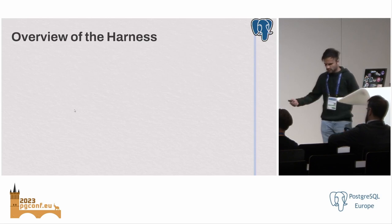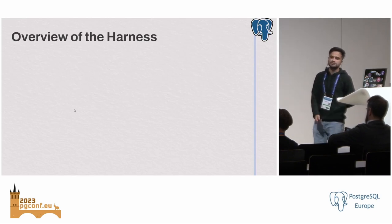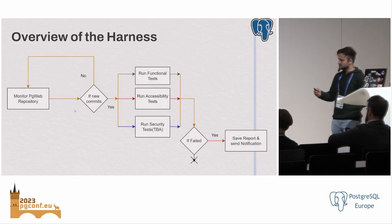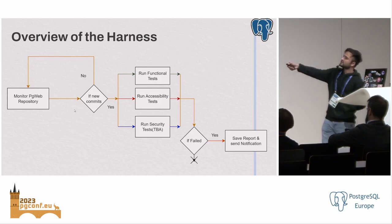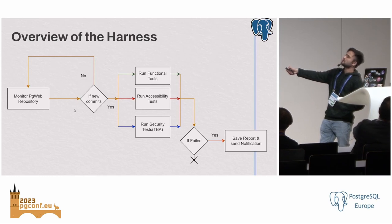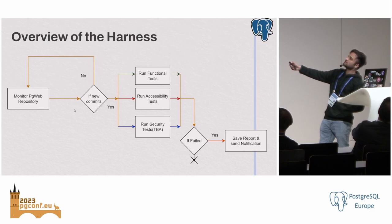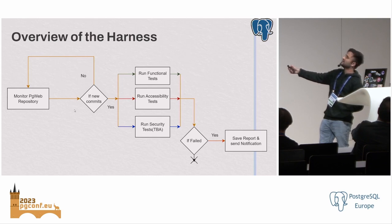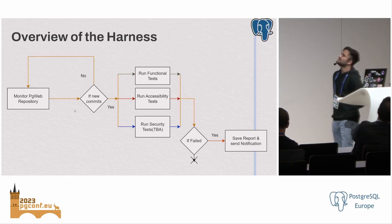Let's get to the overview — the flow of the entire process. We are monitoring the PGWeb repository, checking for any new commits, and we currently plan to run three tests: we are running two right now — functional and accessibility. If there are any failures, we send a complaint to Magnus.